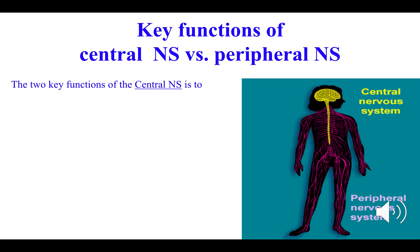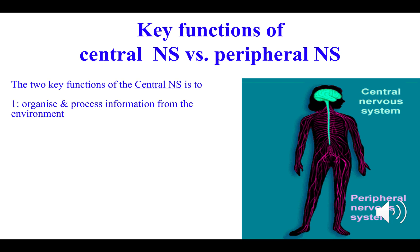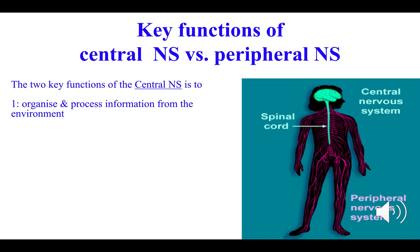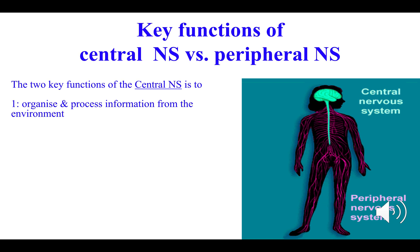The functionality of the central nervous system has two key functions. First, the central nervous system has a job to organise and process information it receives from the environment. Some of this information is from the internal environment via the autonomic nervous system — getting feedback from the digestive system, the cardiovascular system, the endocrine system, the immune system, etc.